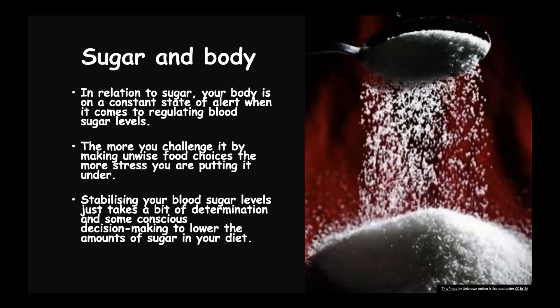Sugar is added to processed foods to make them more appetizing. It is also added to baked goods to contribute colour and texture, acts as a preservative, helps fermentation, can be used as a bulking agent, and can balance acidity. Food producers also know that we are generally hooked on sugar.